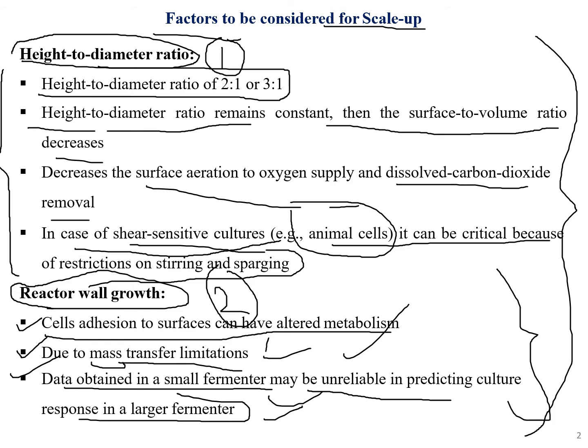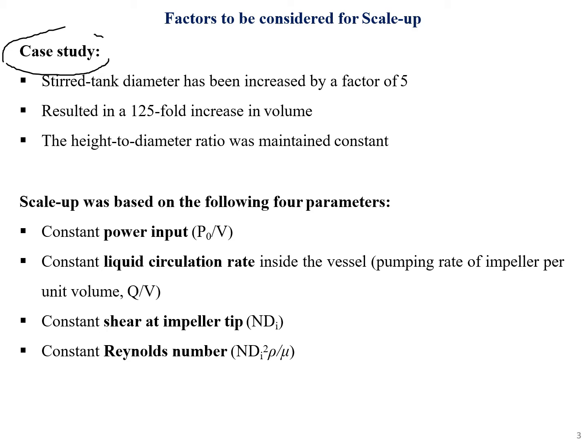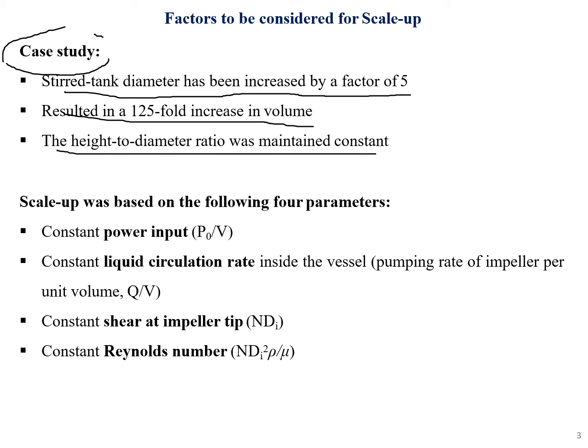As a case study: a stirred tank's diameter was increased by a factor of five, resulting in a 125-fold increase in volume, while the height to diameter ratio was maintained constant. This demonstrates how increasing diameter drastically increases volume, and why maintaining the height to diameter ratio is the primary concern in bioreactor scale up.